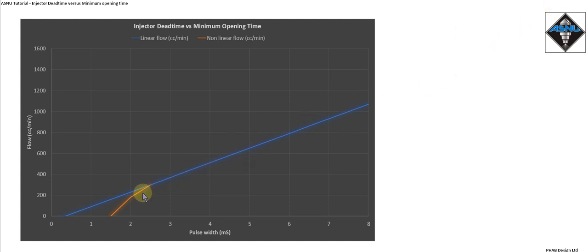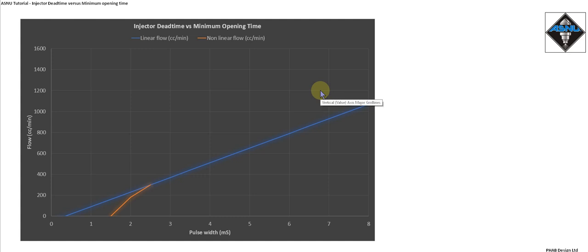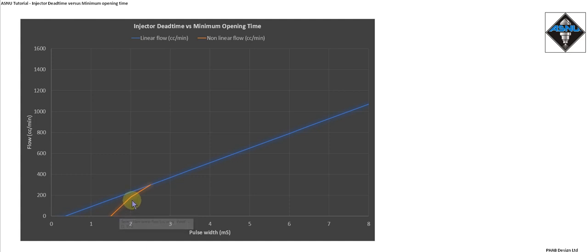This non-linear region is normally irrelevant because most production vehicles won't operate in this region — the minimum pulse width will be above this point, so you'll never see a problem with non-linear flow versus pulse width. It's really only when we start to try and increase engine power and fit much larger injectors that we need to run in this region to get a nice idle condition. This becomes a problem because the ECU will be expecting this straight line when in actual fact the injector is operating like this.